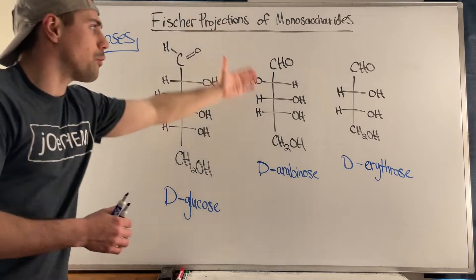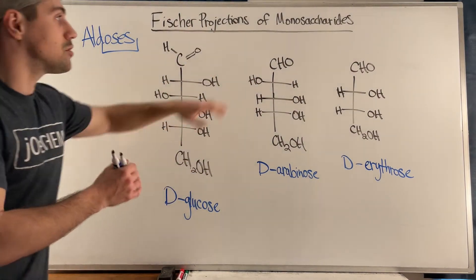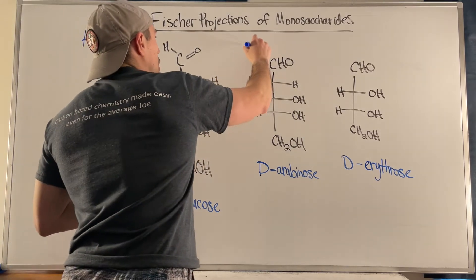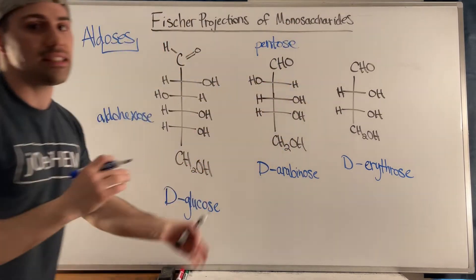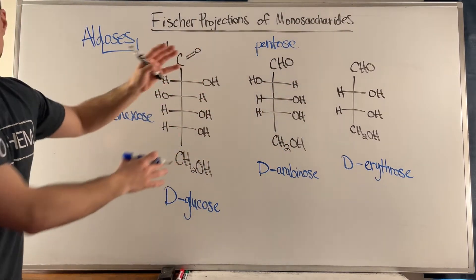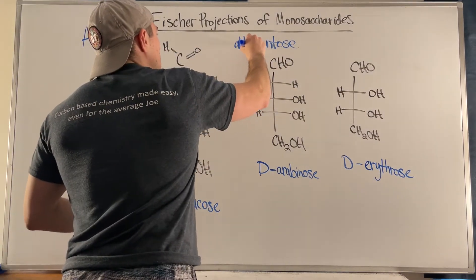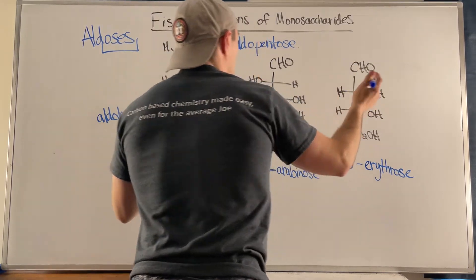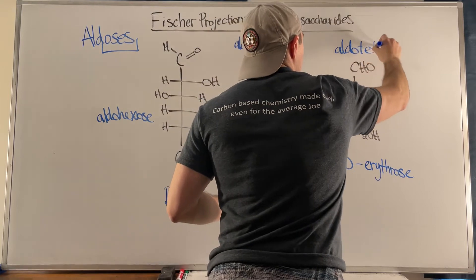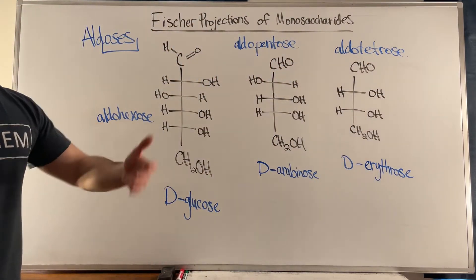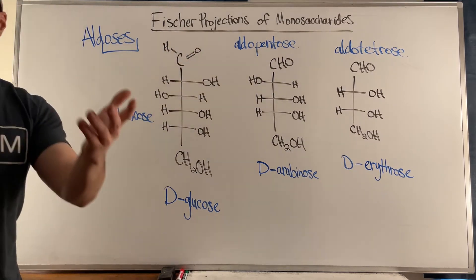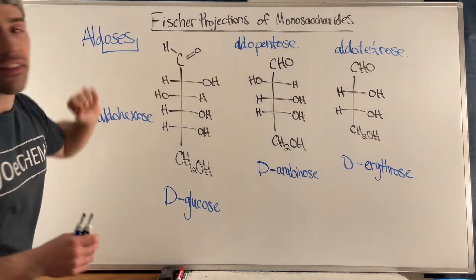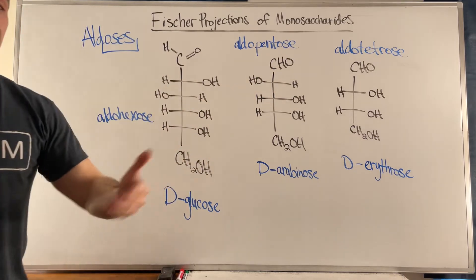D-arabinose is an aldose because we see an aldehyde at the top, and there are five carbons, so I could call it a pentose — or more specifically, an aldo pentose. It's an aldose with five carbons. And something like erythrose with four carbons I could call an aldo tetrose. Don't be thrown off if someone asks you to draw a valid aldo pentose — this part means aldehyde at the top, and this part refers to how many carbons are in the sugar.